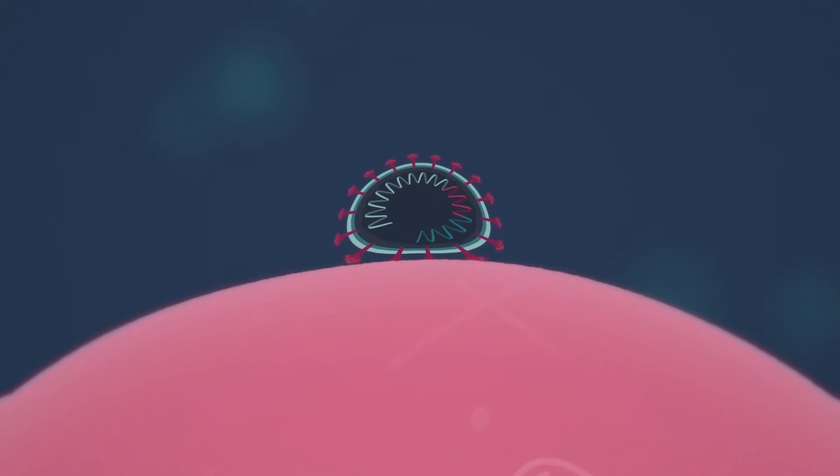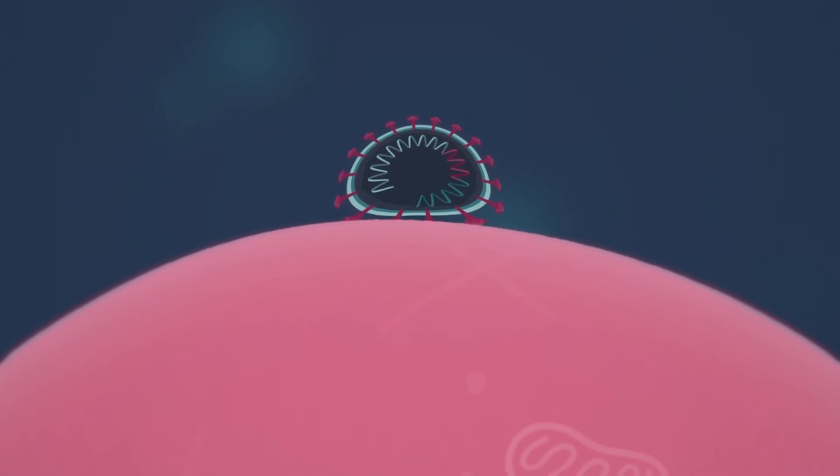When a virus lands on a human cell, the spike proteins allow the RNA in the virus to enter the human cell.